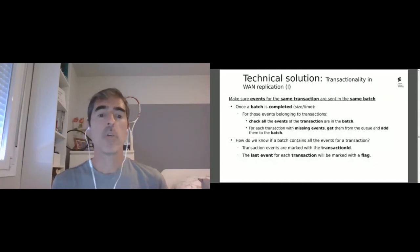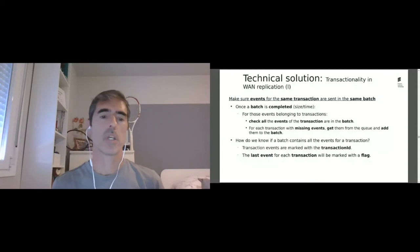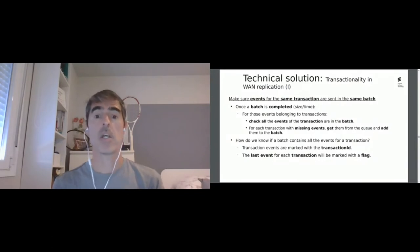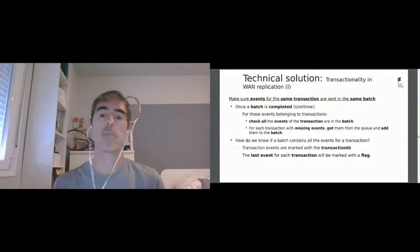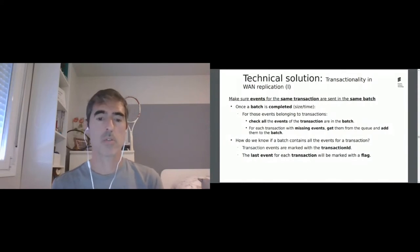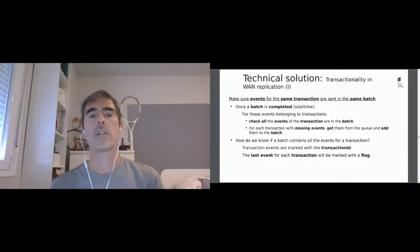The question is: how do we know if a batch contains all the events for a transaction? We use two mechanisms. First, because this is how Apache Geode works, transaction events are marked with the transaction ID. So for each event inside a batch, we can know which transaction it belongs to. Second, we are going to add a flag to events indicating whether the event is the last event for the transaction. This will allow us to achieve our goal of avoiding the transactionality problem in WAN replication.